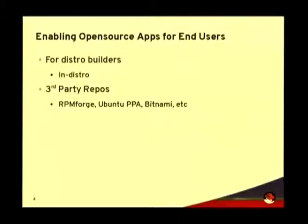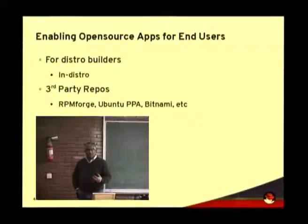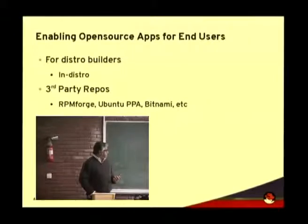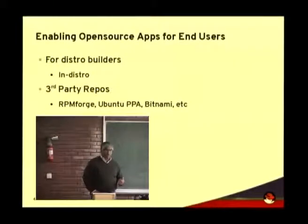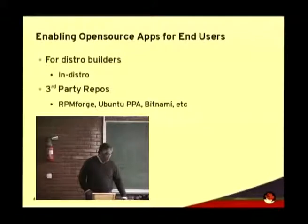In terms of what is available today from a packaged perspective, if we look at distributions — in the Ubuntu/Debian case, we're talking about in-distro versions of Apache, MySQL, and so on. Then there are third-party repos, so RPMForge and others provide additional packages that the distributions themselves don't provide, whether different versions or other things. Those are really the two things going on from packaged application availability.